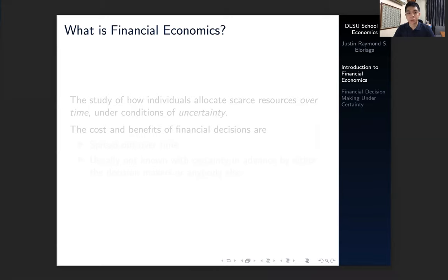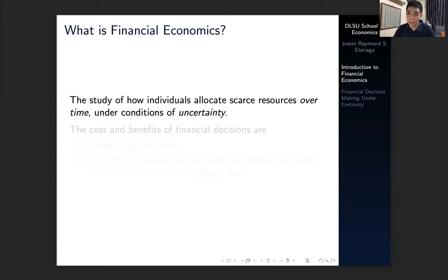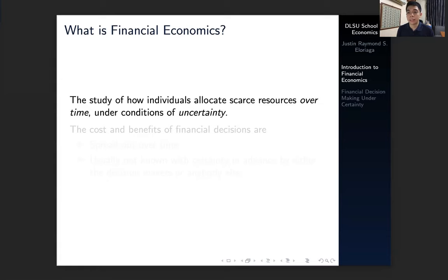What is the definition of financial economics? We define it as the study of how individuals can allocate their scarce resources over time. It's a modification of our original definition of economics in that instead of just saying it for a period, we generalize it into all periods of time. We also say that it operates under conditions of uncertainty, and that element of uncertainty is key to understanding financial economics. When we're dealing with things in the financial markets, returns are generally random variables and they don't necessarily constitute some deterministic asset.